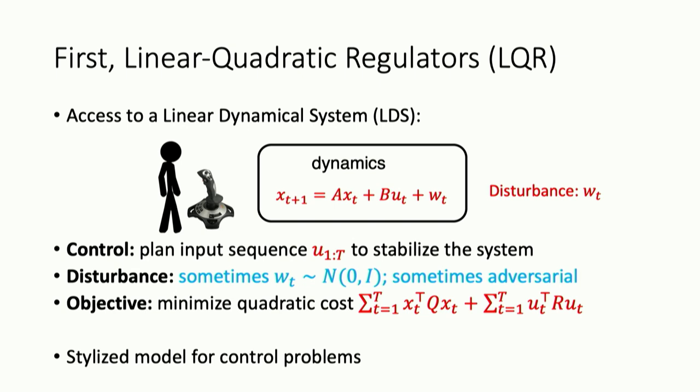In some cases, we think about these disturbances as coming from some distributional model like Gaussian. In other cases, we think about these disturbances W_t as being chosen adversarially. There's quite a lot of both old and new work on this problem, and we've heard about some of the newer work at this workshop.